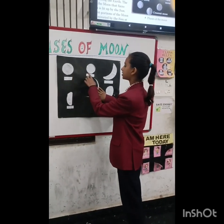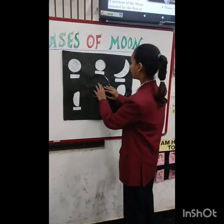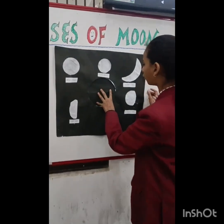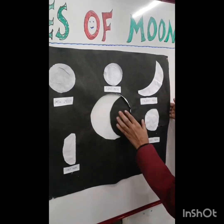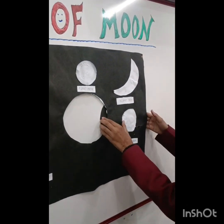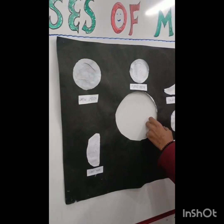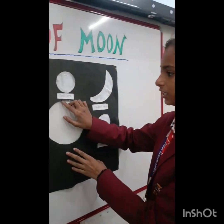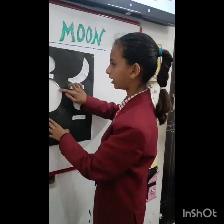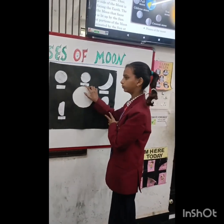This is called full moon. When the entire portion of the illuminated side of the moon faces toward the earth, we can see the perfectly round moon. It is called the full moon.